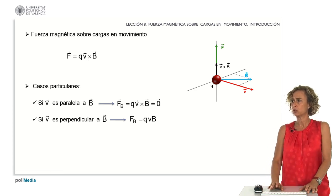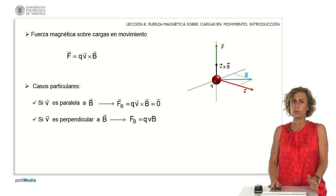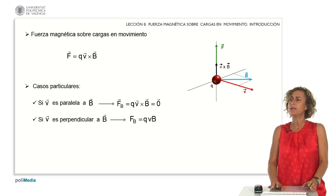When v was parallel to the magnetic field, the force was null, and when v was perpendicular, the force reached its maximum magnitude. In this class, our focus will be understanding the types of motion these charges exhibit in these two scenarios.